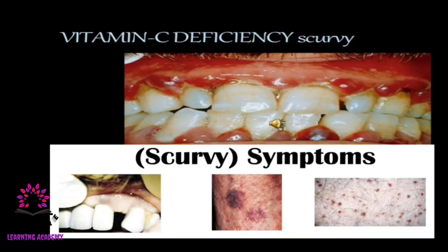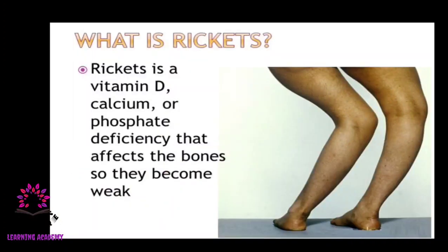Without vitamin C, you get scurvy. Symptoms include soft and bleeding gums, toothaches, and swelling in the legs. Without vitamin D, you get rickets, caused by calcium and phosphate deficiency that weakens the bones. The leg bones become weak and bent.